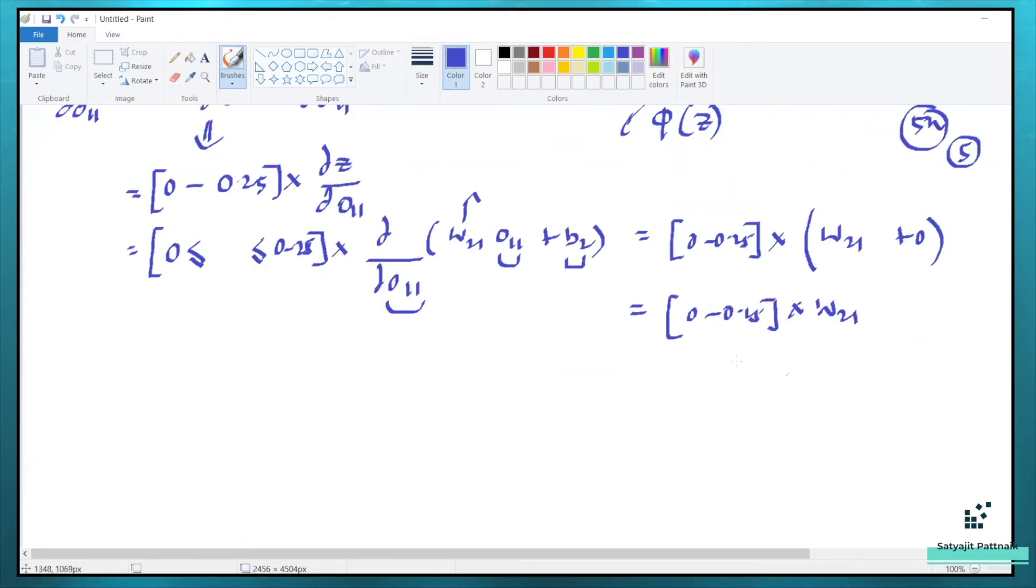Now, as I already told, exploding gradient problem is not relevant with sigmoid function, but it has something to do with weights. How weights are initialized is not up to us. It is neither a hyperparameter as well. So let's say a situation where my W21 old value is, let's say, 500. So what will be the new value of W21? Something within the range of 0 to 0.25 multiplied with the old value.